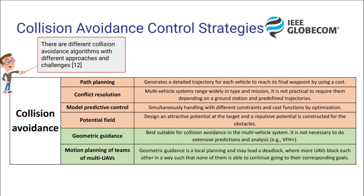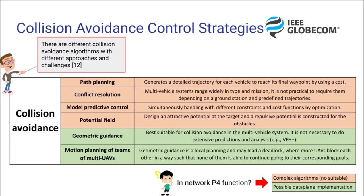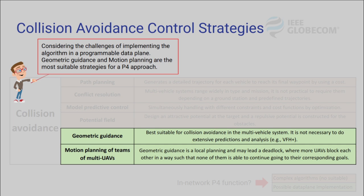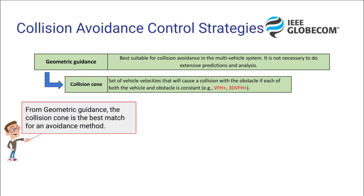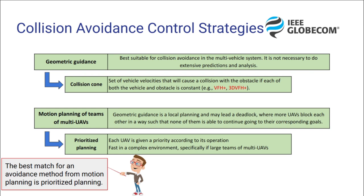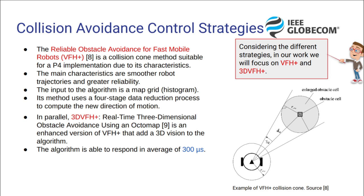There are different collision avoidance algorithms with different approaches and challenges. If we try to implement an in-network P4 function, we need to find the best algorithm for our use case. Considering the challenges of implementing an algorithm in a programmable data plane, geometric guidance and motion planning are the most suitable strategies for a P4 approach. From geometric guidance, the collision cone is the best match for an avoidance method. From motion planning, the best match is prioritized planning. Considering the different strategies, in our work we will focus on VFH+ and 3D VFH+.